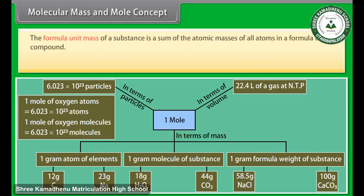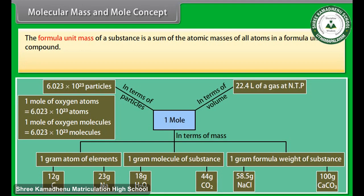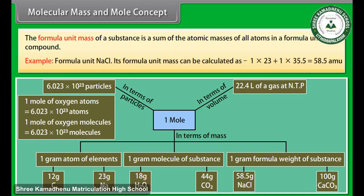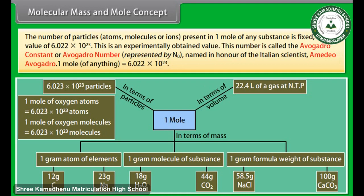The formula unit mass of a substance is the sum of the atomic masses of all atoms in a formula unit of a compound. Example — formula unit NaCl: its formula unit mass is calculated as 1 × 23 + 1 × 35.5 = 58.5 units. The number of particles, atoms, molecules, or ions present in one mole of any substance is fixed with a value of 6.022 × 10²³.